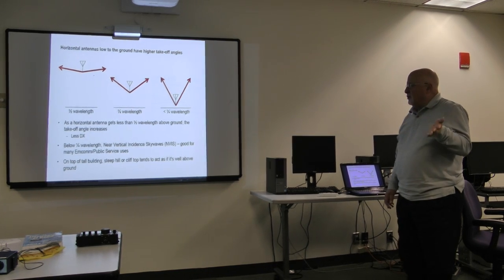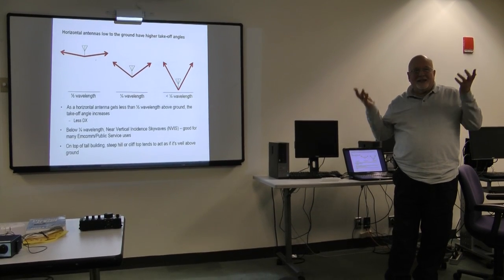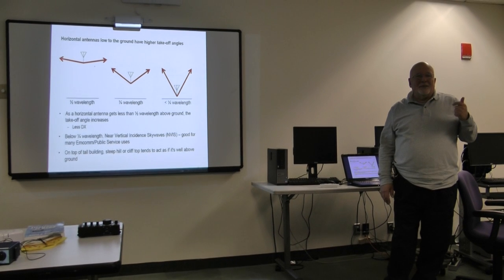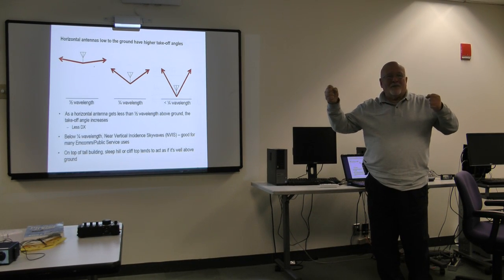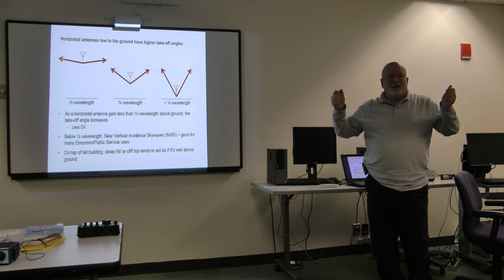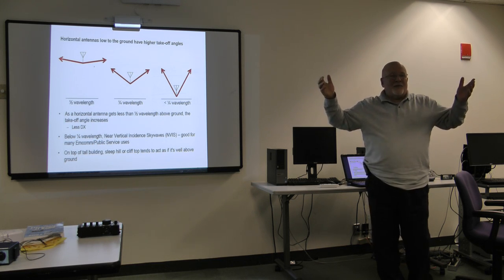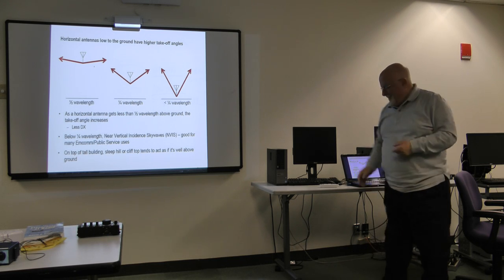The exception to that is if you're on a tall building or steep hill, cliff top, that's like having your antenna 1,000 feet above ground or whatever. A lot of times you'll see these things like, I took my buddy pole up to the top of whatever mountain, my buddy pole horizontal, and I got 3,000 miles. I don't understand what you're saying. Well, yeah, you're on the top of a mountain. That's like having your antenna 10,000 feet above ground. Of course you were.